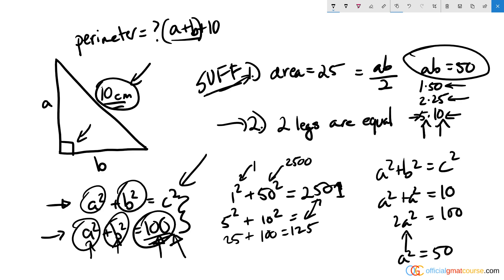This is definitely solvable for a. We're going to get a² = 50, and that means that a equals the square root of 50, which is equal to 5√2 (square root of 25 times the square root of 2). And if we have a and we know b is equal to a, then we can also solve for b, so statement 2 is sufficient.